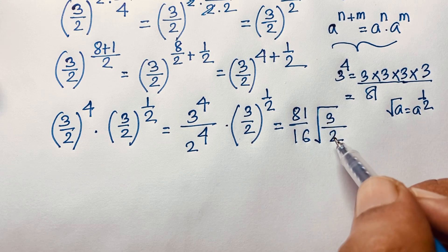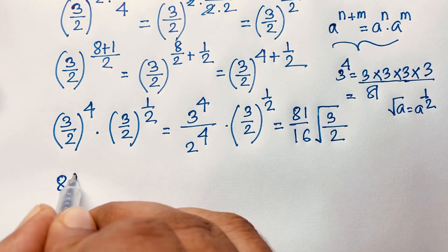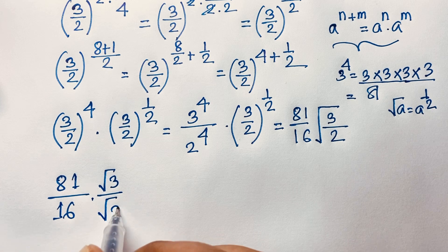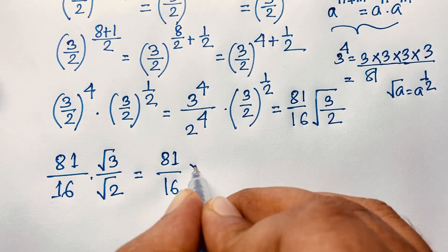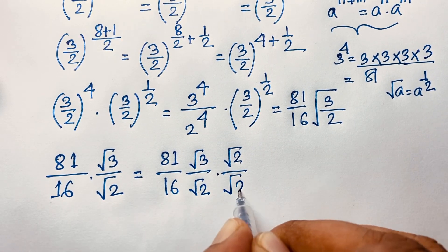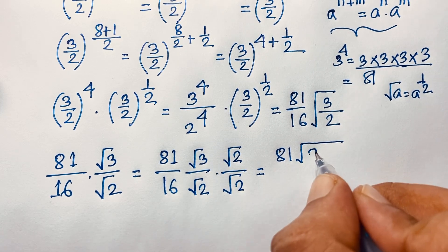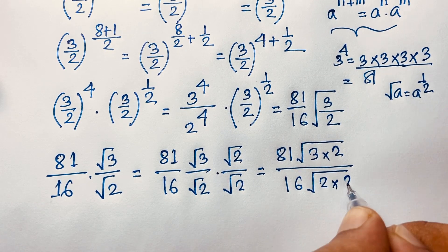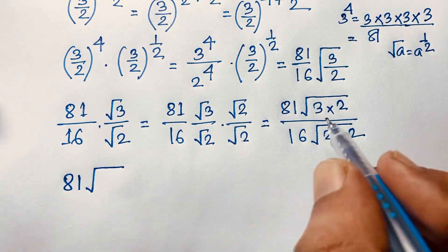We have 81/16 times √3/√2. To rationalize, we multiply numerator and denominator by √2, giving us 81 times √3 times √2 over 16 times √2 times √2. The square roots of 2 multiply to give √(3×2) in the numerator, which is √6.